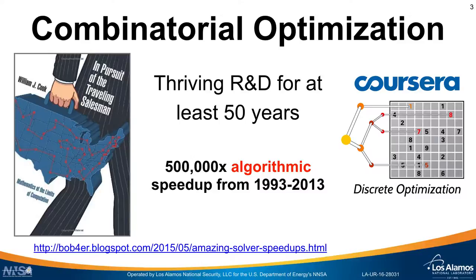The interesting fact is that after controlling for hardware speedup of computers, these algorithmic R&D developments from 1993 to 2013 resulted in over 500,000 times speedup in the ability to solve these particular problems. So this R&D effort is really bringing significant improvements to this area.